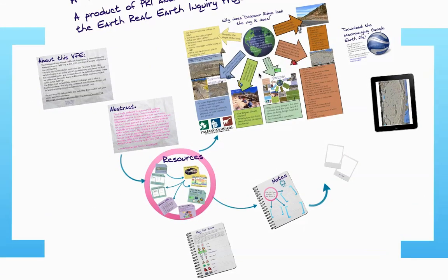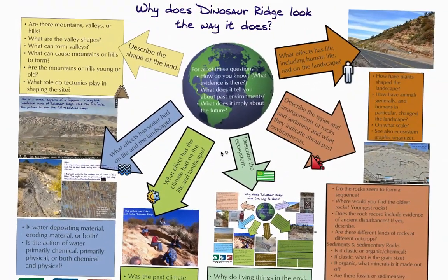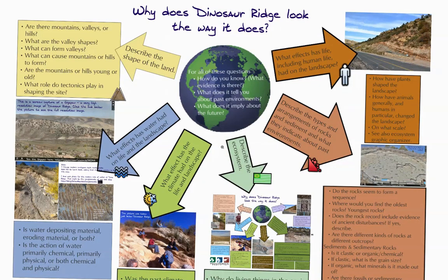I am going to skip ahead to the graphic organizer, which has at the top a version of the project's driving question. The generic version of this is 'why does this place look the way it does?' For Dinosaur Ridge, we want to know why that looks the way it does. This is created using a template that has, under the overarching question, a series of other questions that can be asked about anywhere — and that's an important lesson of the work.